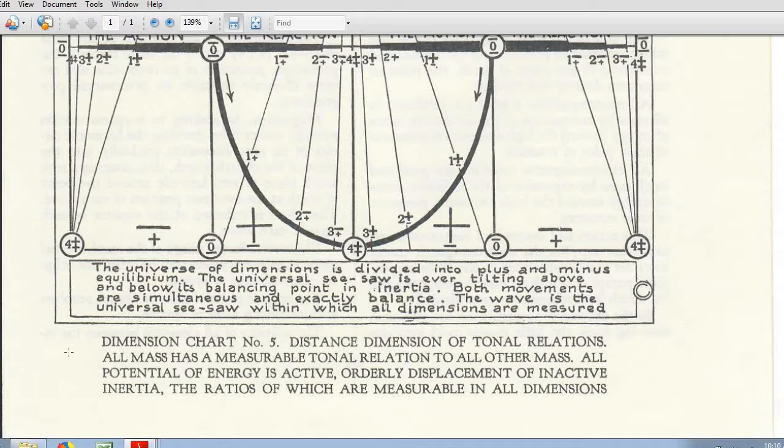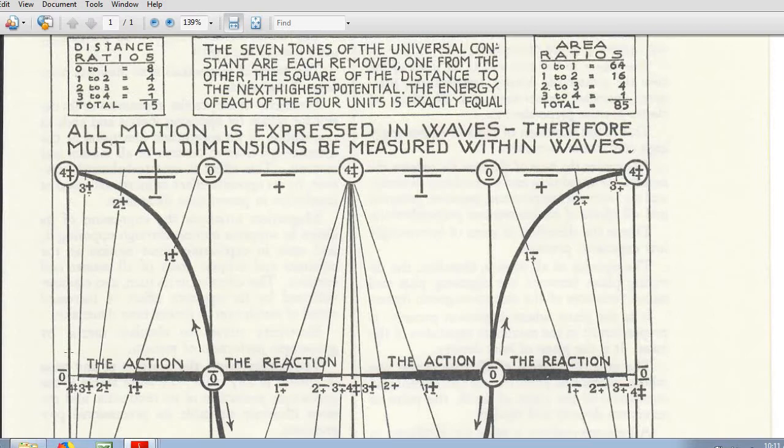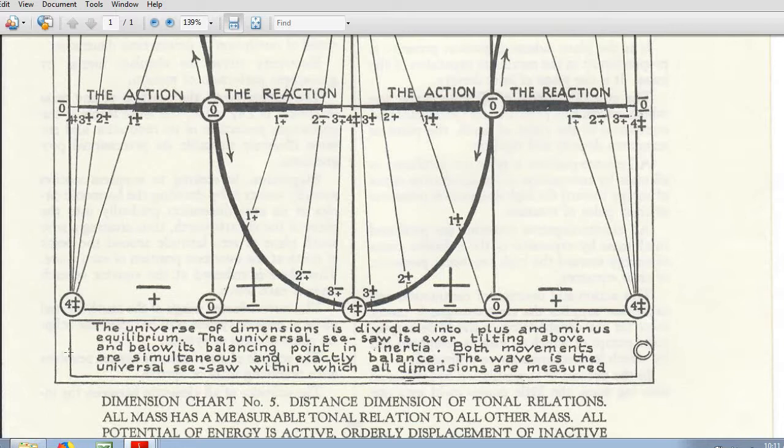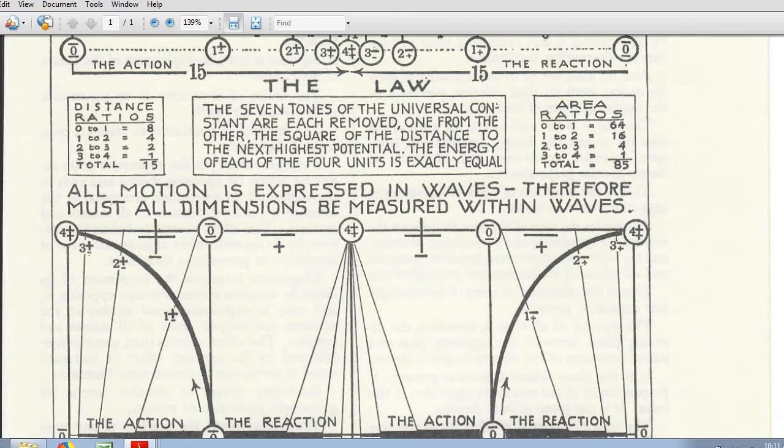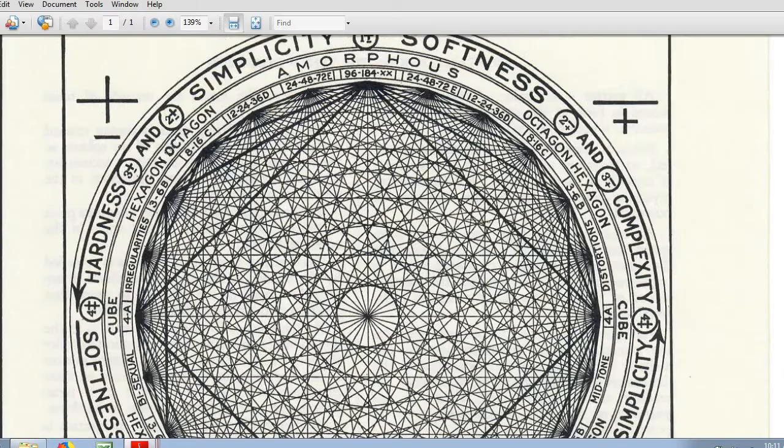Now so really the key to the things that we need like free-energy and things like that is to recognize that there's a tonal element of the octave wave, in addition to all the other dimensions that Walter Russell has identified.